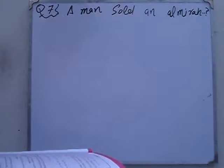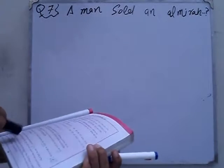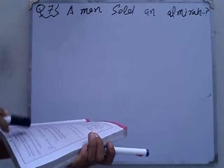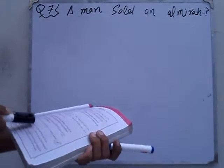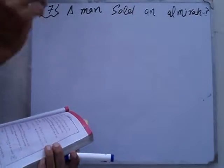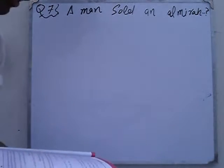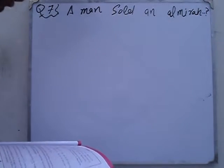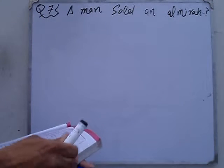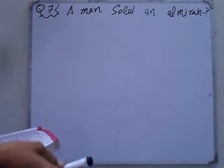How much did the man purchase it for? A man sold an armari at a profit of 7 and a half percent. Had he sold it for Rs. 209, he would have lost 2 percent.